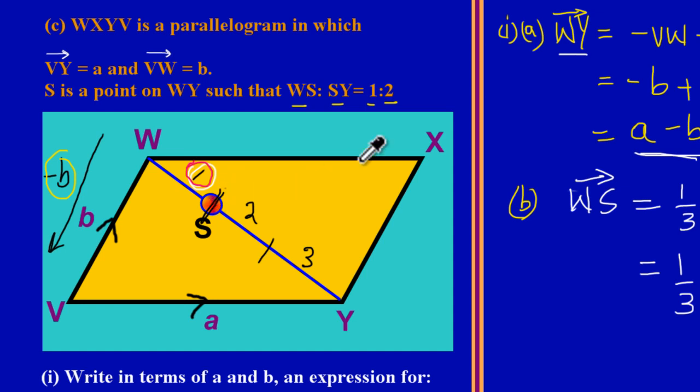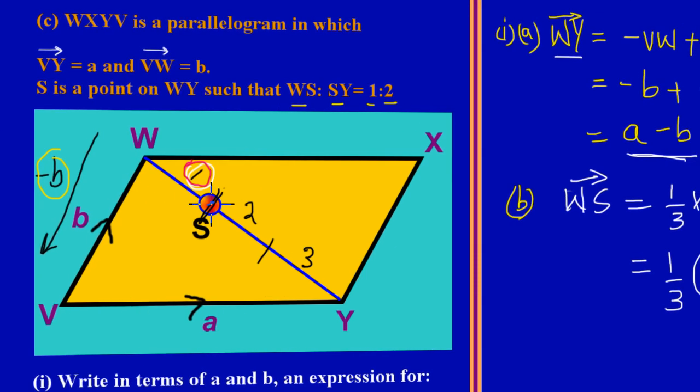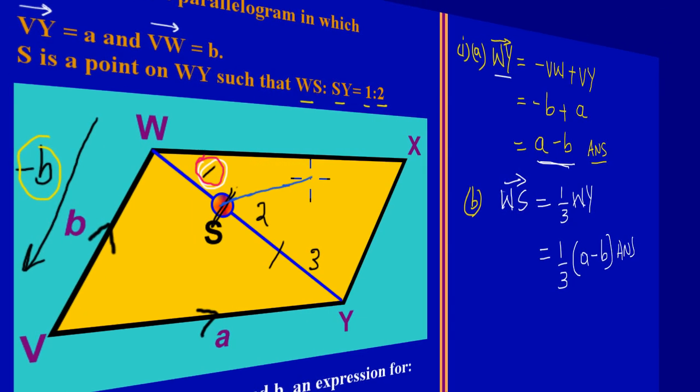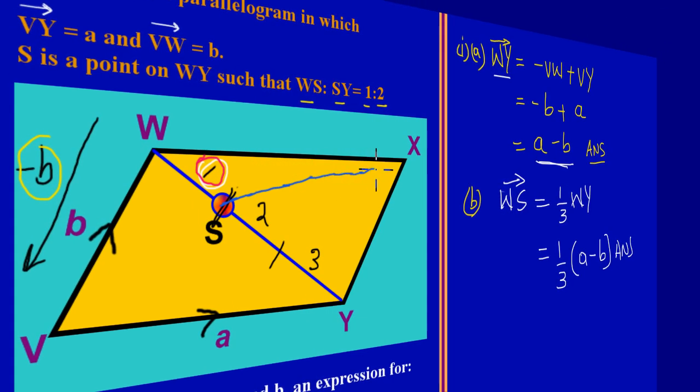Let me get my pencil. Basically, they're asking us to write an expression for this distance from point S going straight across to point X. That's the distance we're interested in.